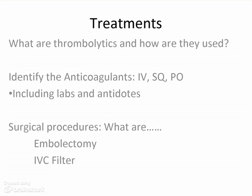The two surgical procedures you might see are an embolectomy, which is the surgical removal of the clot, or an inferior vena cava filter — also known as a Greenfield filter — which is a basket-like device inserted into the IVC to catch clots coming up from the lower extremities. It is heparinized; the clots stick there, dissolve on their own, and are reabsorbed by the body.